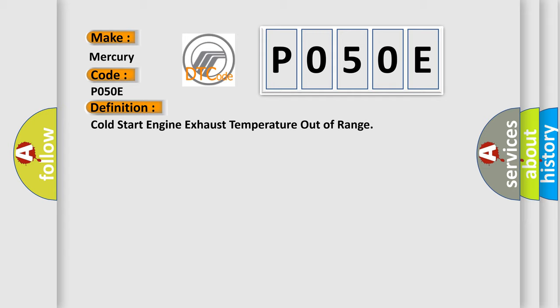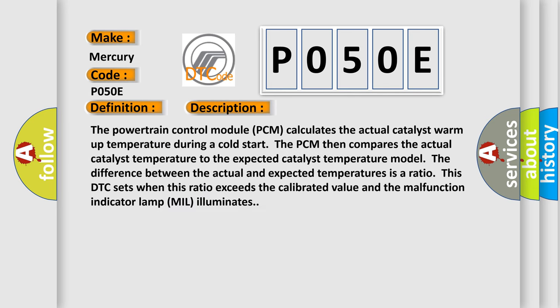Here is a short description of this DTC code. The powertrain control module (PCM) calculates the actual catalyst warm-up temperature during a cold start. The PCM then compares the actual catalyst temperature to the expected catalyst temperature model. The difference between the actual and expected temperatures is a ratio. This DTC sets when this ratio exceeds the calibrated value and the malfunction indicator lamp (MIL) illuminates.